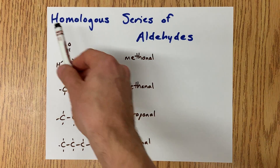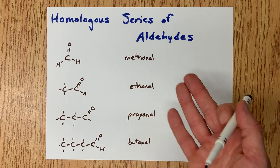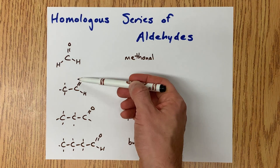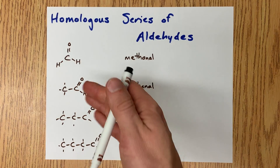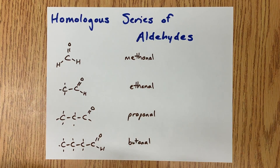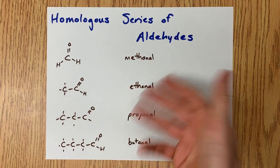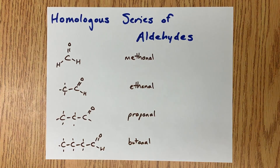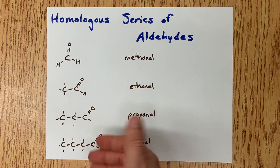What makes the homologous series special is that these all have similar reactivities or properties. The hydrogen attached to the double bonded O has the same propensity to react. No matter what the rest of the chain is, these all react like aldehydes do — they can be oxidized into carboxylic acids, as an example.